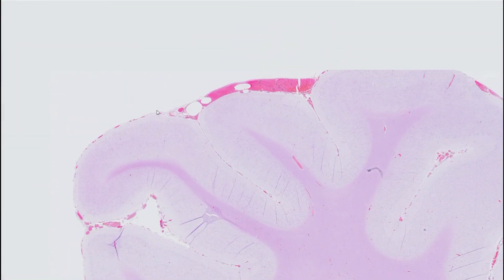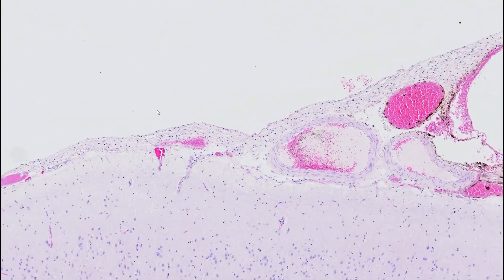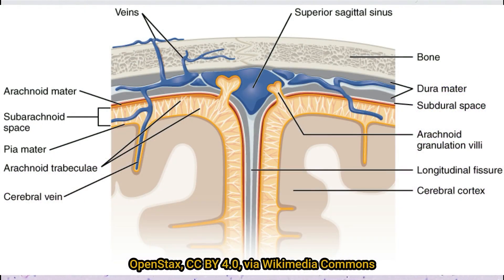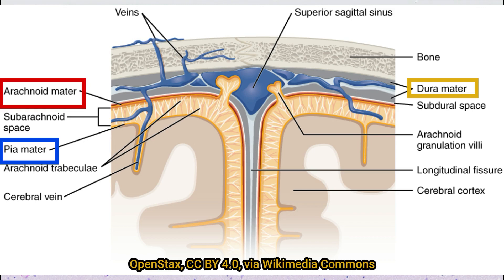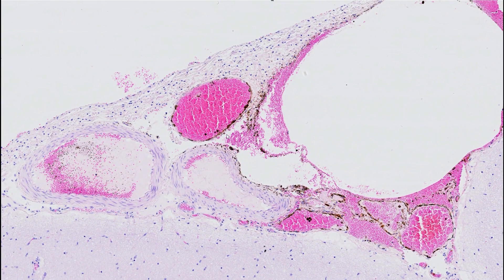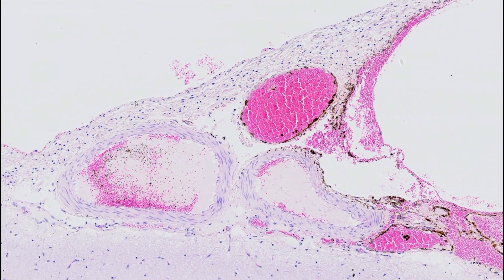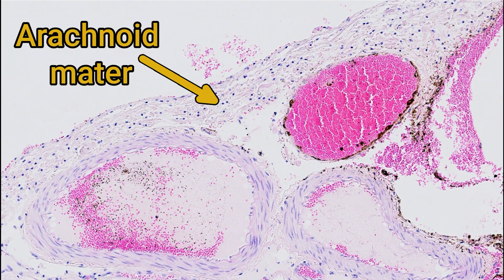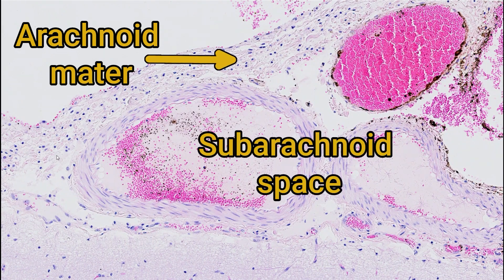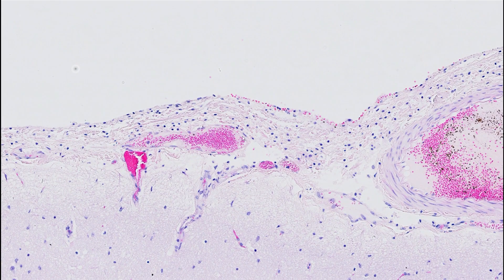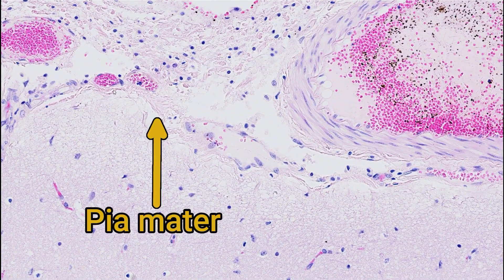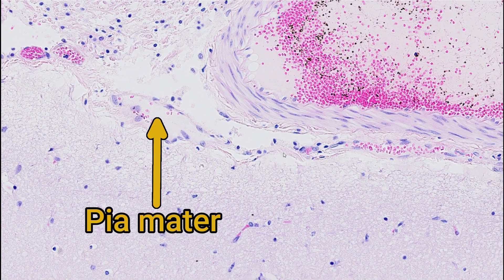If we start to look at things at a higher power, we can move from the outside towards the inside. Encasing the brain, there are the meninges. If you remember from your gross anatomy, there are three meninges: the dura mater, the arachnoid mater, and the pia mater. The dura mater is often not present on slides because it comes away easily, whereas the arachnoid mater and the pia mater are much more firmly attached. The outermost layer of collagen and connective tissue is the arachnoid mater, and then below that there's the subarachnoid space, which often has blood vessels, some of them quite large. Adhered to the brain is the pia mater - all of this collagen here just adhering to the grey matter underneath.